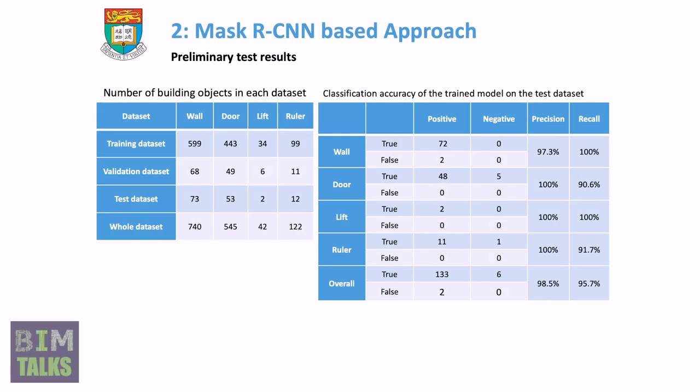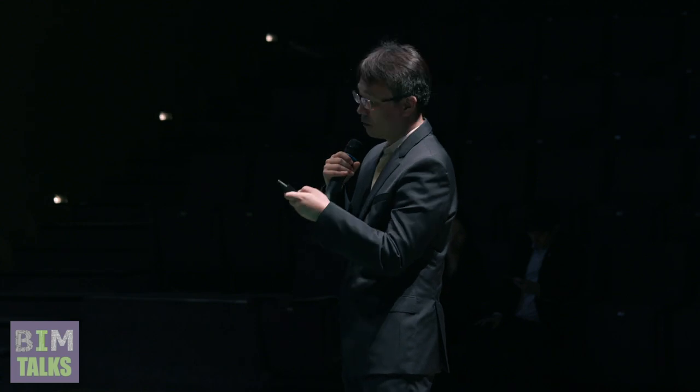For training, we collected about 600 window images, 400 door images, 34 lift images, and 99 ruler images. For testing, the results showed very accurate predictions. For walls, about 97.3% accuracy. Doors, lifts, and rulers showed no problems. Overall accuracy was 98.5%.